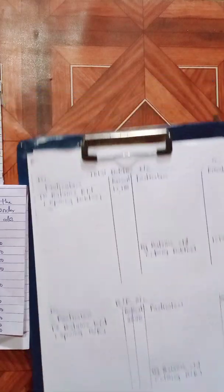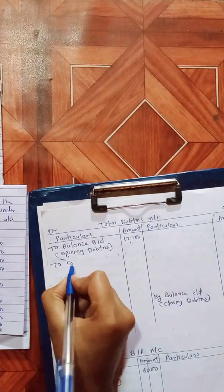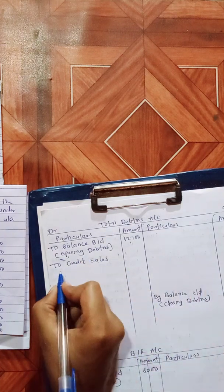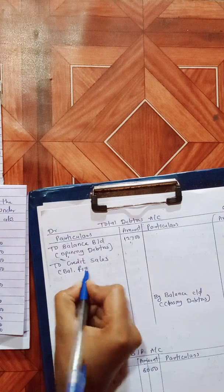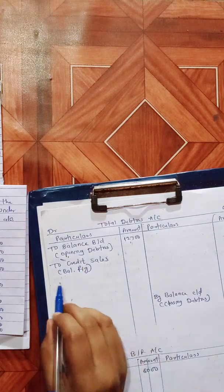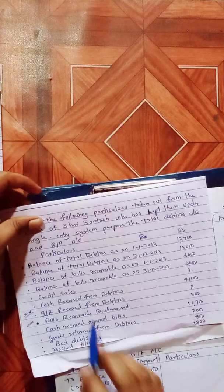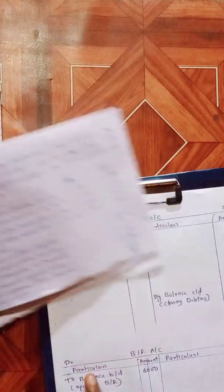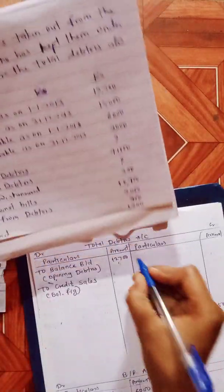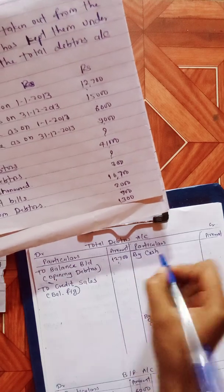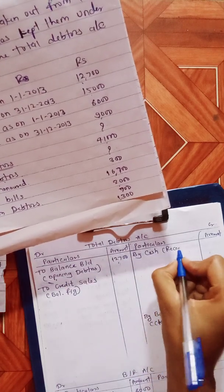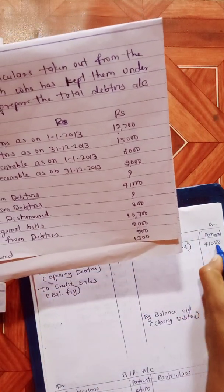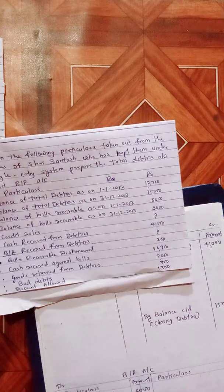Credit sales is a missing item, so it will be the balancing figure. We need to find it out. Next, cash received from debtors: the word 'debtors' is there, so in debtors account we write 'by cash received' in brackets. The amount of cash received from debtors is 41,000.